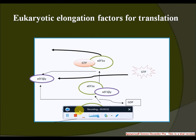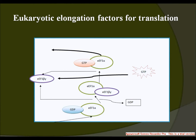Welcome to the Knowledge Club Online. I am going to discuss the eukaryotic elongation factors for translation. Eukaryotic elongation factors are very similar to those in prokaryotes. Elongation in eukaryotes is carried out with two elongation factors: eEF1 and eEF2.